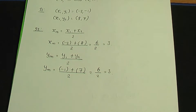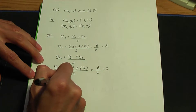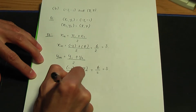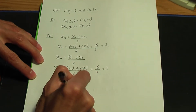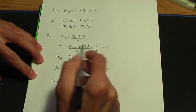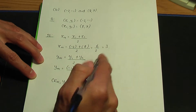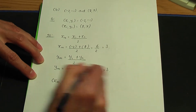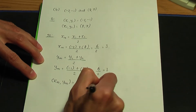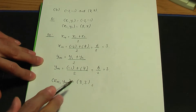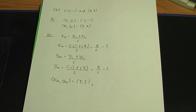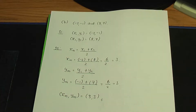So 3 is the y-coordinate of the midpoint. The coordinates of the midpoint, xm and ym, are 3 and 3 respectively. That's how you would calculate the coordinates of the midpoint.